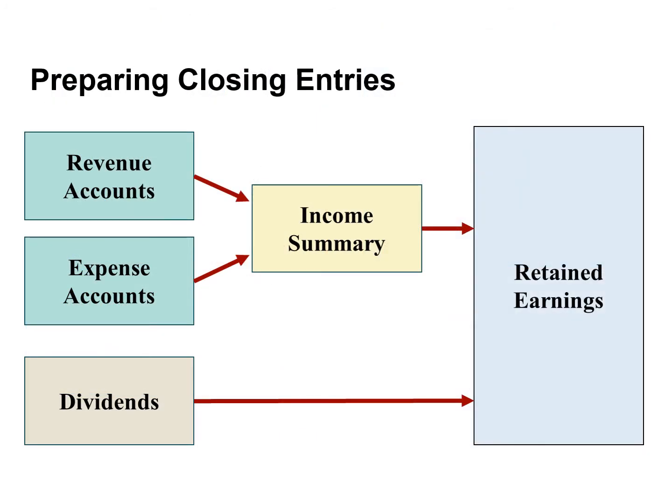When companies prepare closing entries, they could close each income statement account directly to retained earnings. However, to do so would result in excessive detail in the retained earnings account. Instead, companies close the revenue and expense accounts to another temporary account called income summary. The balance in the income summary is the net income or net loss for the accounting period. Income summary is then closed, which transfers the net income or net loss from this temporary account to retained earnings. Companies close the dividend account directly to retained earnings.